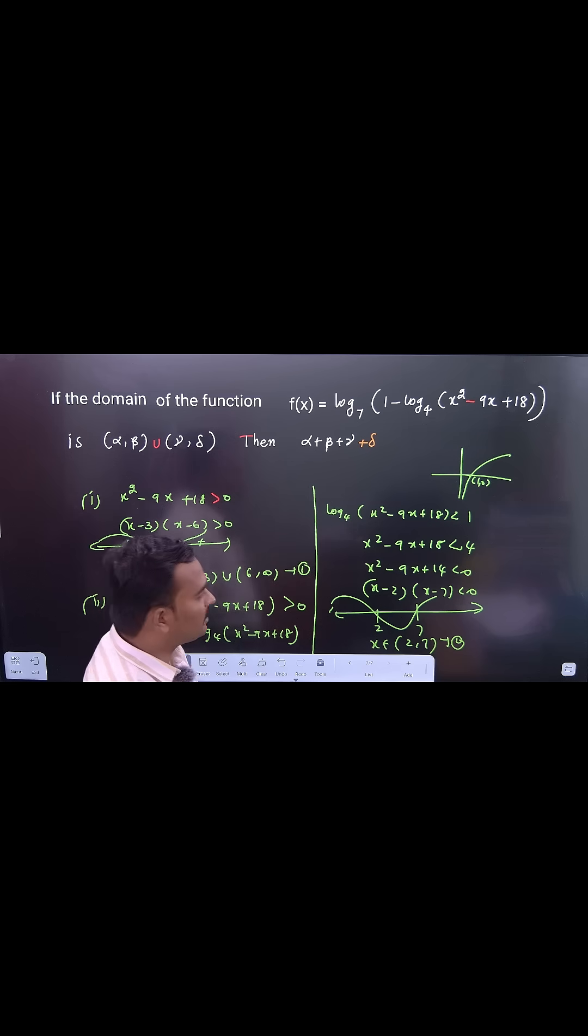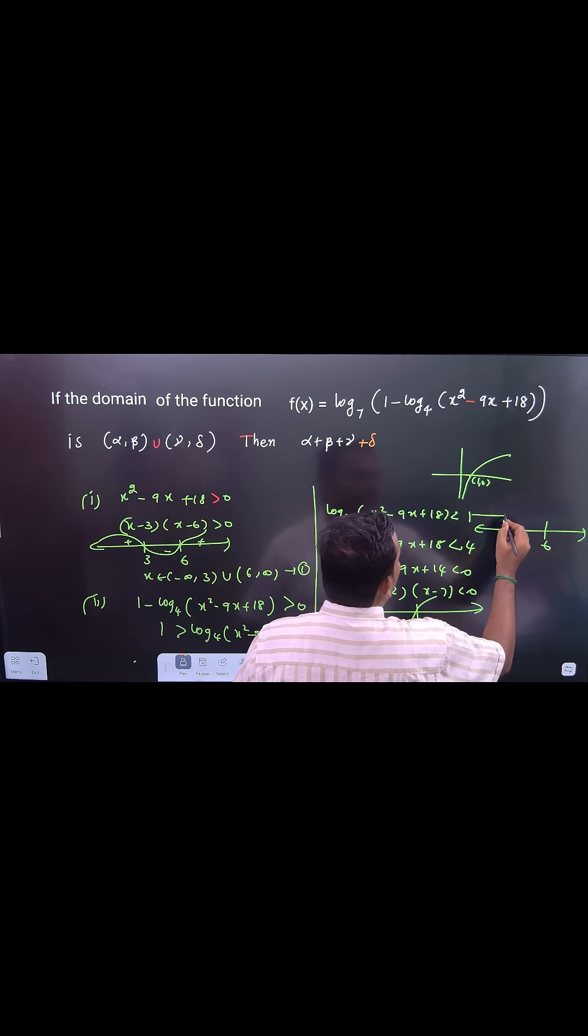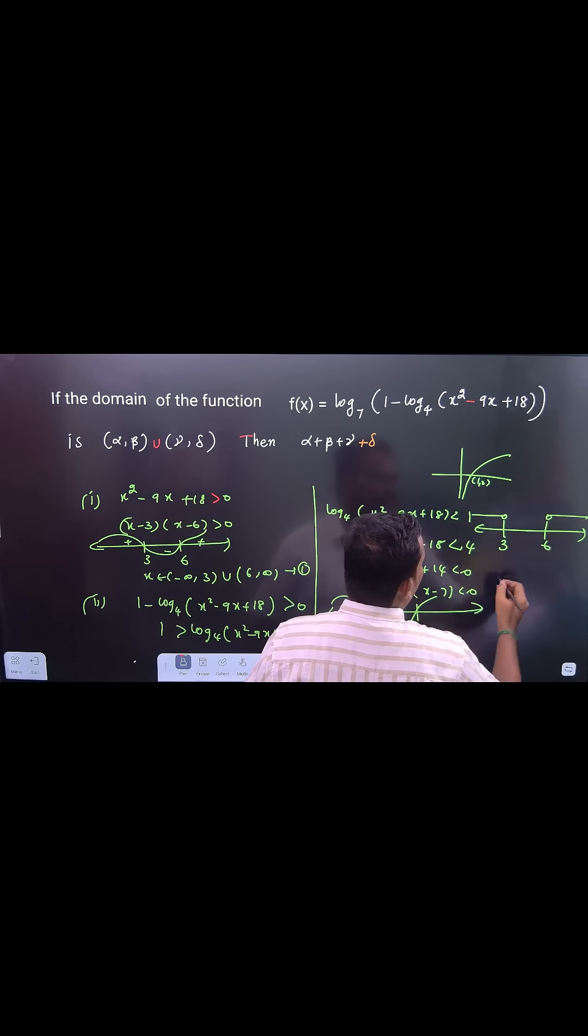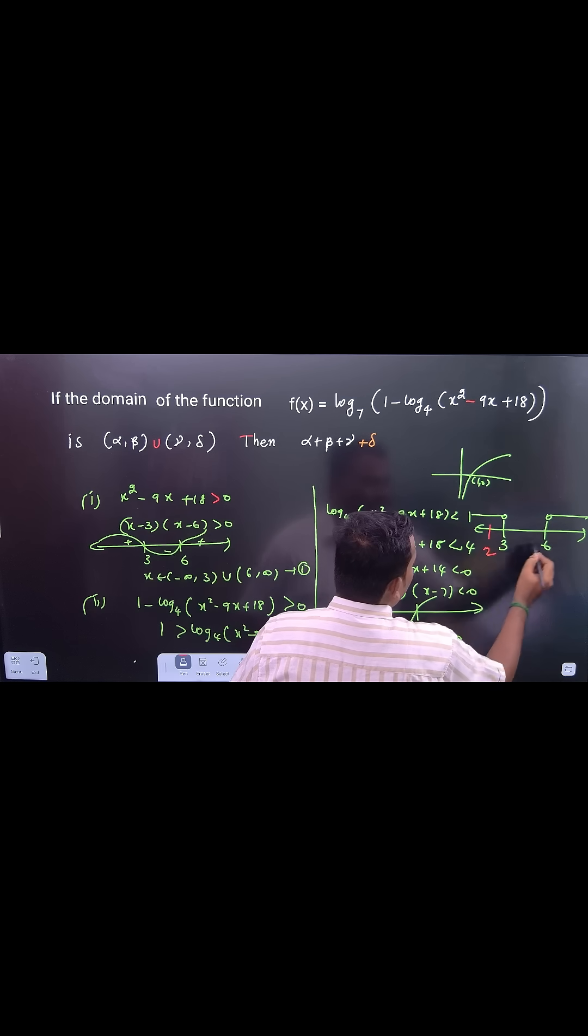Then only the domain is defined. So therefore the first thing is 3, here is 6: (-∞, 3) and (6, ∞). And second one you can see (2, 7). So which is the common here is 2: x belongs to (2, 3) ∪ (6, 7).